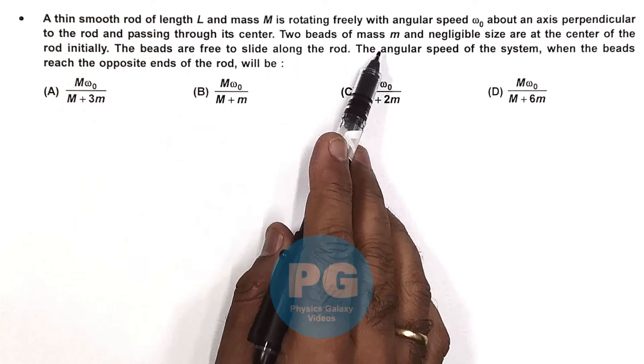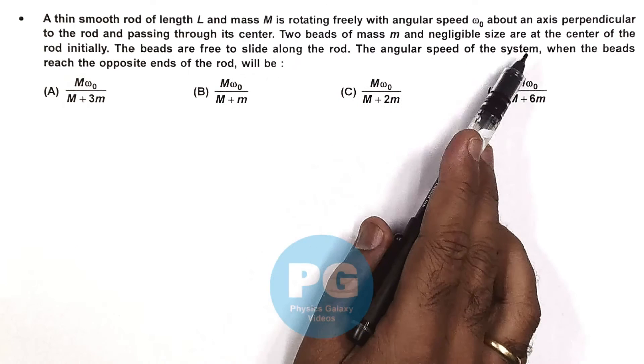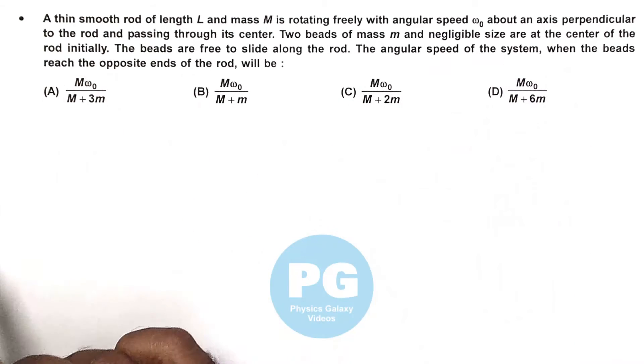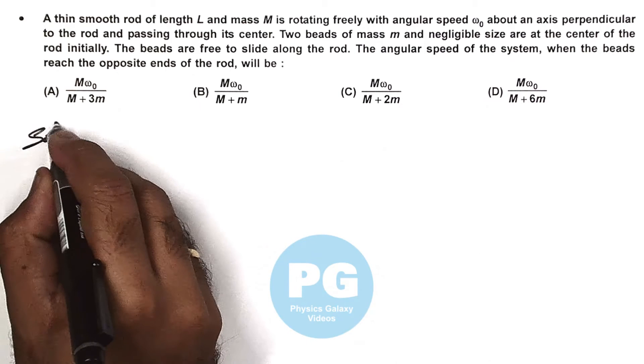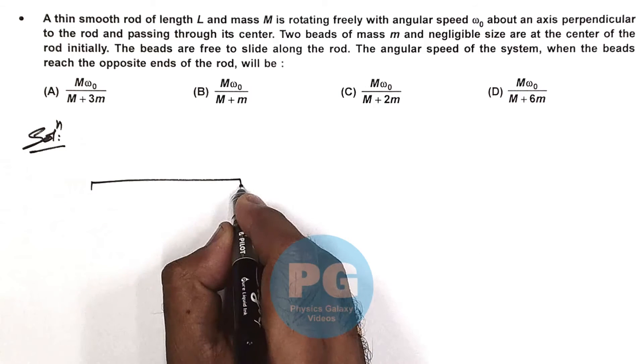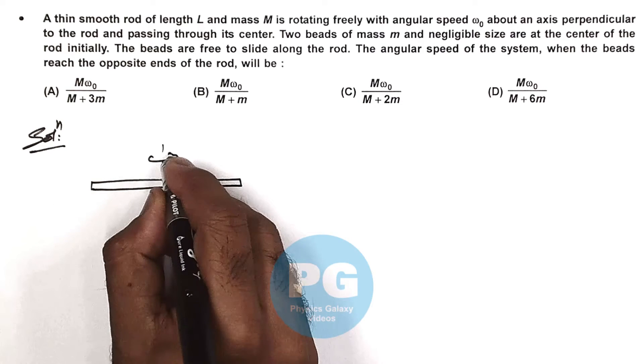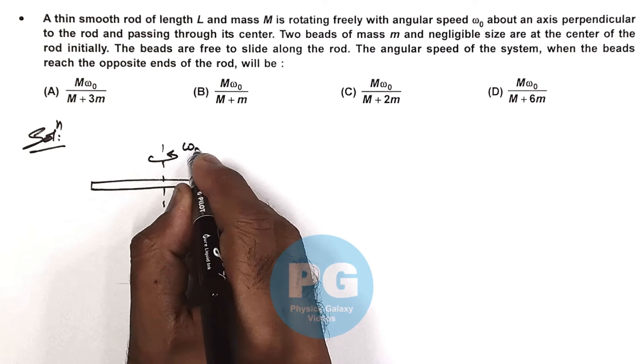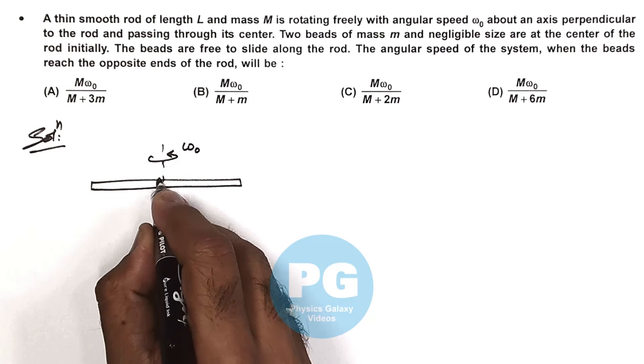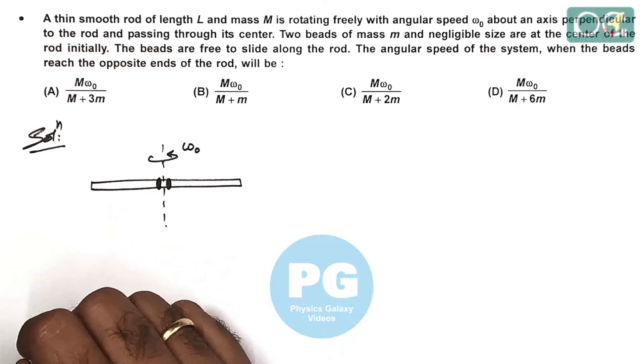Two beads of mass M and negligible size are at the center of the rod initially. So if we draw the situation it looks like this is a rod and about the central axis of rotation it is rotating at an angular speed omega naught and there are two beads which are initially at the center.